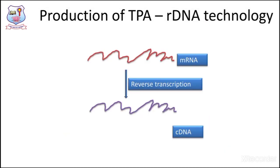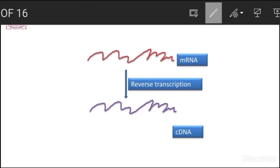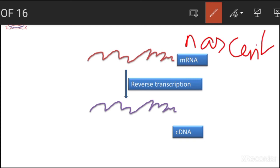In the next step, the newly synthesized mRNA — also called nascent mRNA — is subjected to another procedure called reverse transcription. Reverse transcription enables us to produce a DNA called complementary DNA (cDNA). This is normally different from naturally existing DNA molecules in that cDNA is free from introns.